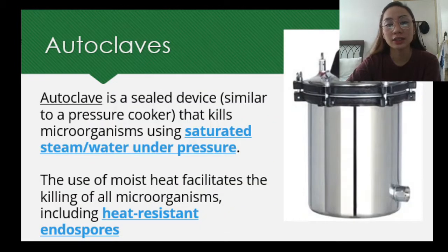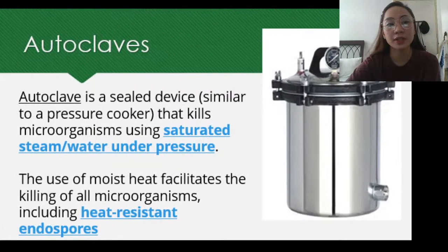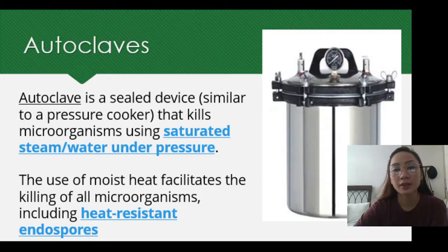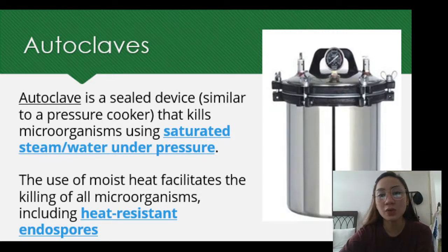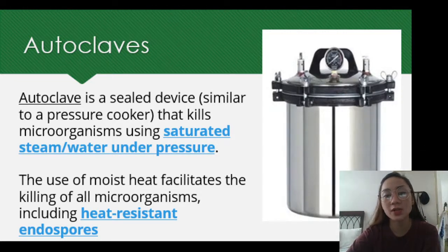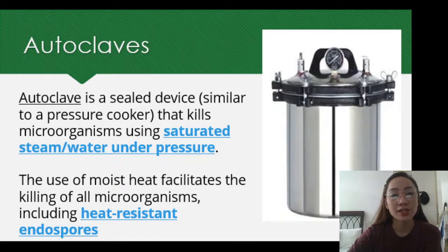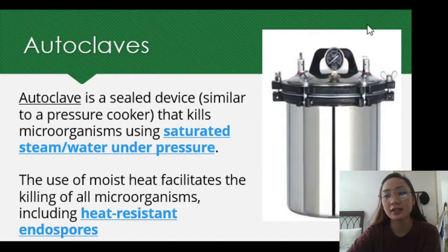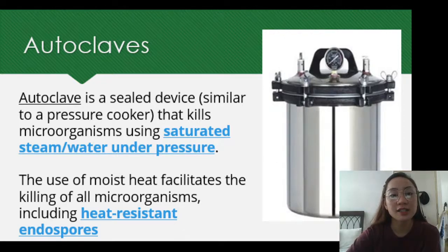This is an example of a very simple autoclave — it looks like a pressure cooker. An autoclave is a sealed device, similar to a pressure cooker, with a lid and screws. It kills microorganisms using steam, saturated steam, or water under pressure. The use of moist heat facilitates the killing of all microorganisms, including heat-resistant endospores such as Bacillus and Clostridium.